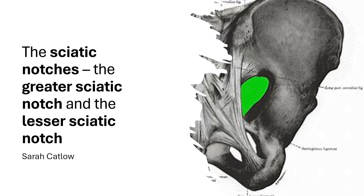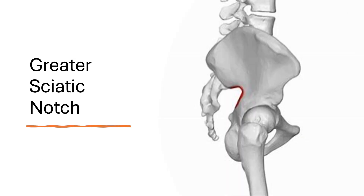We're going to talk about the sciatic notches. There is the greater sciatic notch and the lesser sciatic notch, and they are key anatomical features of the pelvis. The greater sciatic notch is a large indentation in the ileum that forms the superior border of the greater sciatic foramen. It's transformed into a foramen by the sacrospinous ligament, and it allows important structures to pass from the pelvis to the buttocks and lower limb.